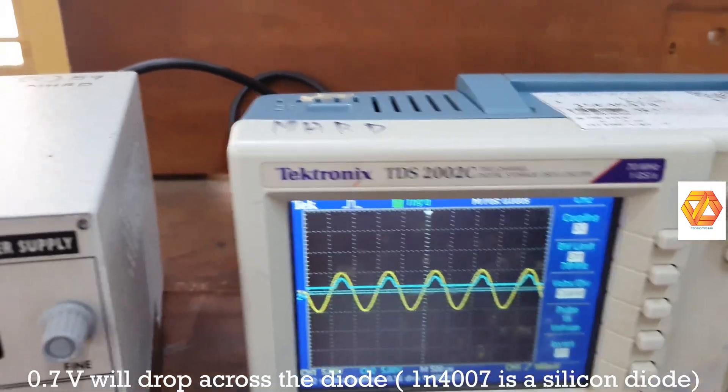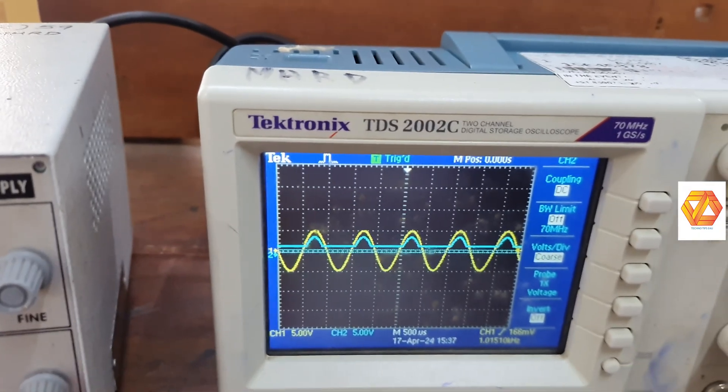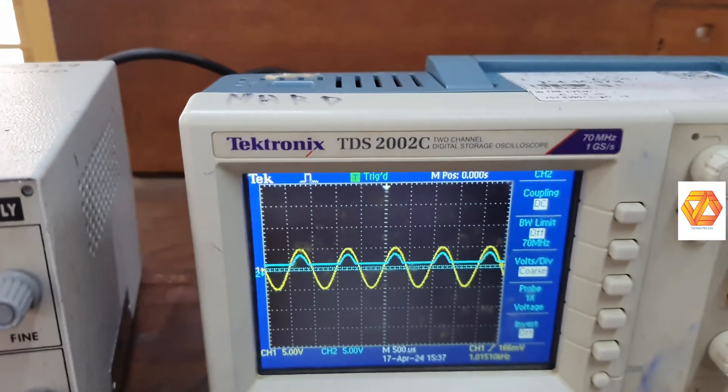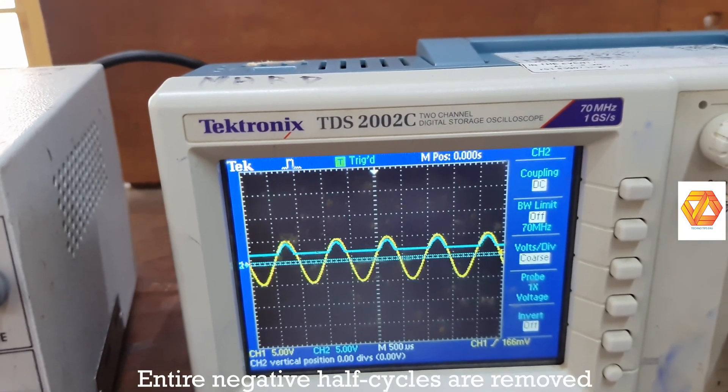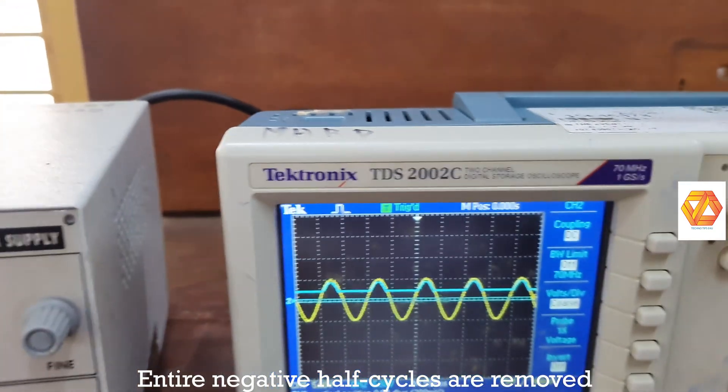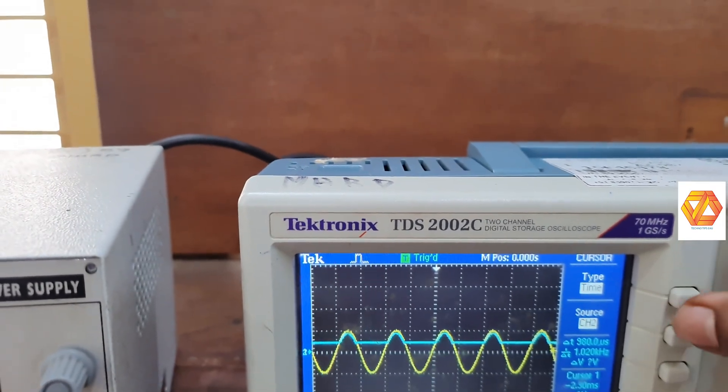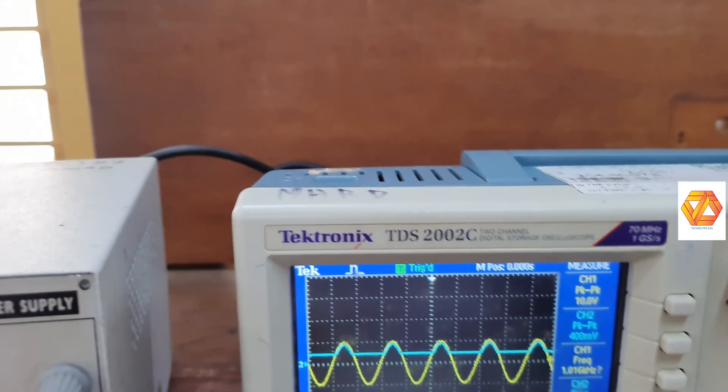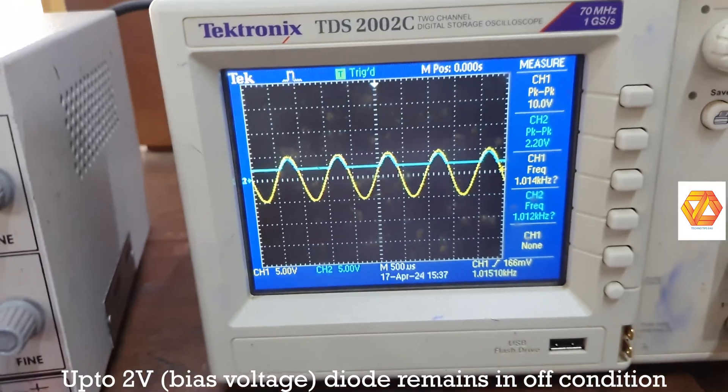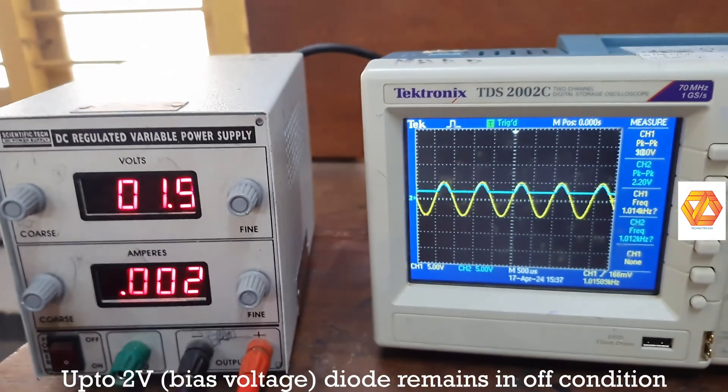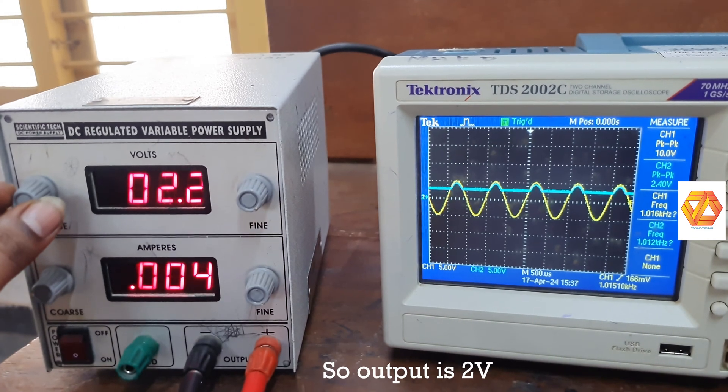So the entire negative half cycle is removed by the circuit. And the output will trace the input only after the bias voltage. So up to 2 volt, up to plus 2 volt will be a DC value in the output and from 2 to 4.3 volt you can see the traces of input.